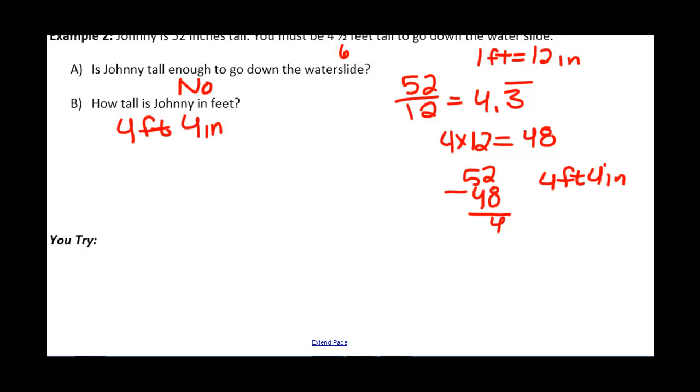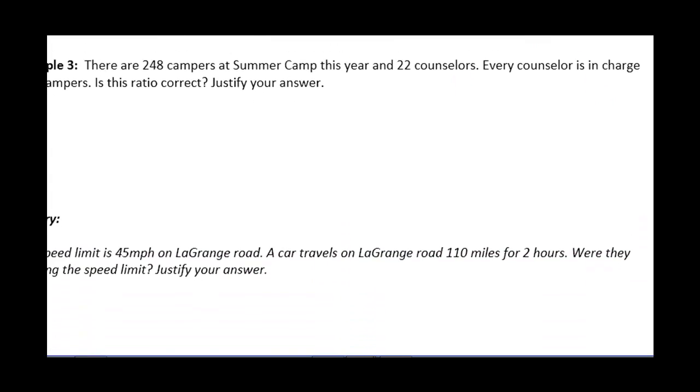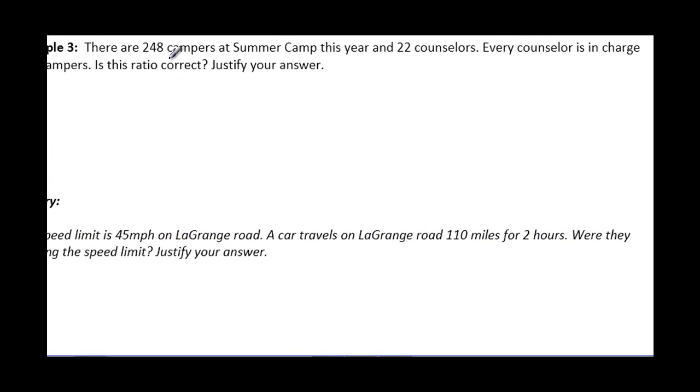Let's go ahead on to example 3. There are 248 campers at summer camp this year and 22 counselors. Every counselor is in charge of 4 campers. Is the ratio correct? Justify your answer.